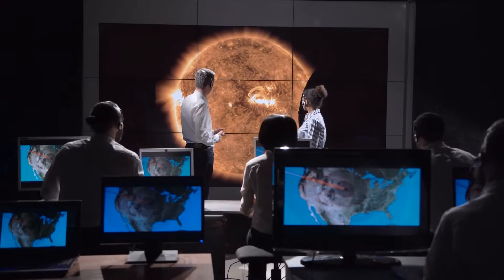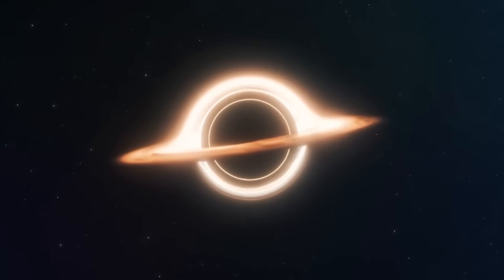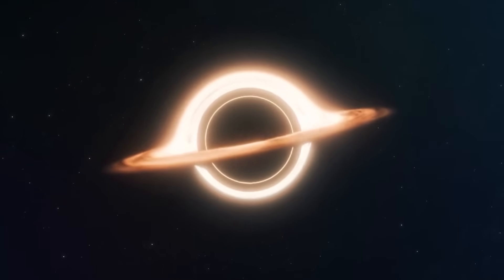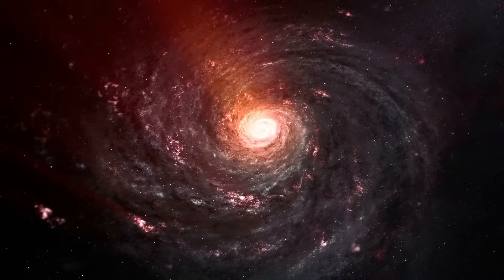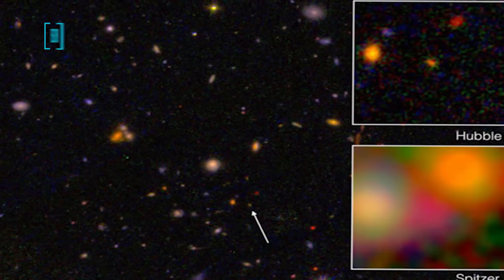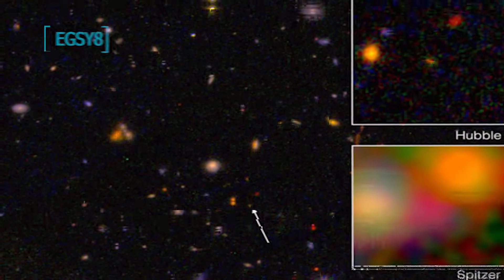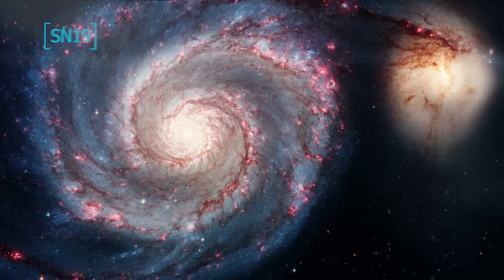Scientists hope that this record-breaking supermassive black hole won't keep its position for very long, because it is now the earliest growing one to be discovered. One of the first galaxies to be identified was discovered to contain a black hole. It was formerly known as EGSY-8, but it has now been renamed CEERS-1019.